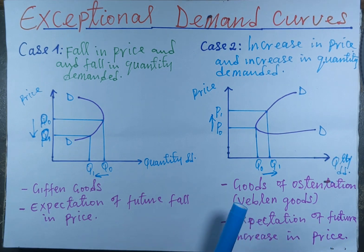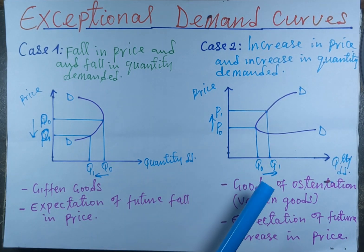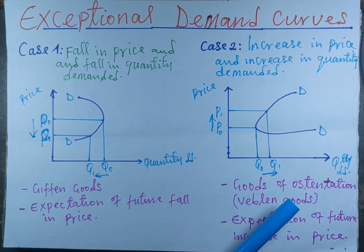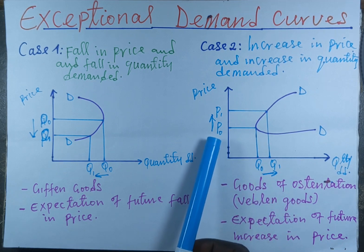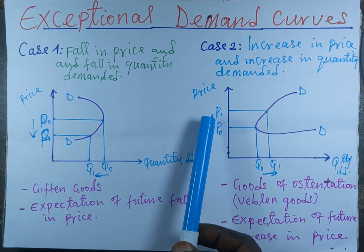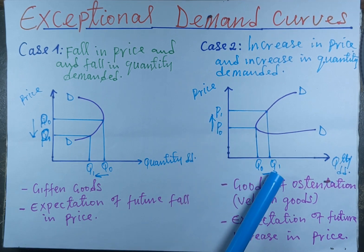The second sub-case here is when consumers are expecting a future increase in price. They will buy more even when prices are currently increasing, because they expect prices will increase further in the future. This is shown on the graph where price increases from P0 to P1 and quantity demanded also increases from Q0 to Q1.